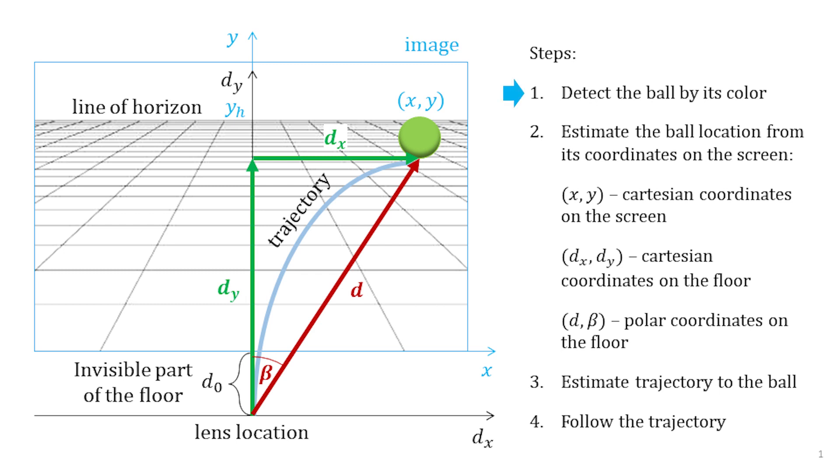As the first step, I need the car to determine if there is a green ball in the camera view. Then, I need to find the ball coordinates relative to the car and estimate the trajectory to the ball. Then, I need to calculate the wheel speeds for the car to follow the trajectory.